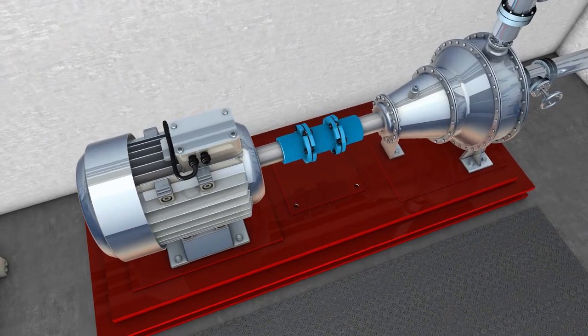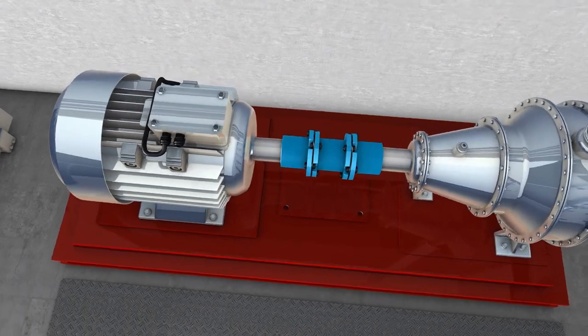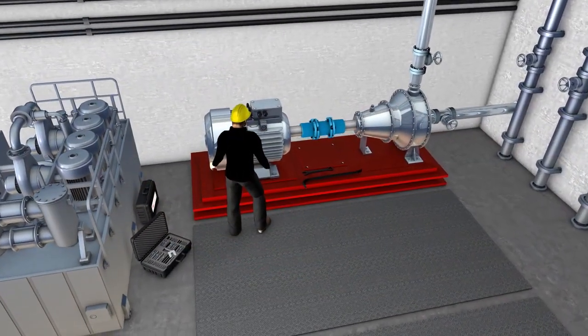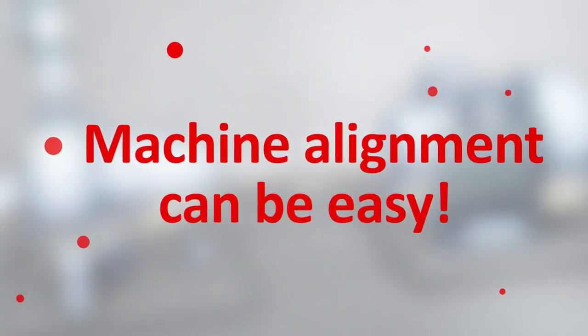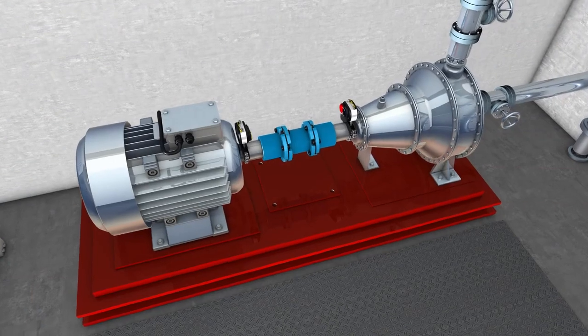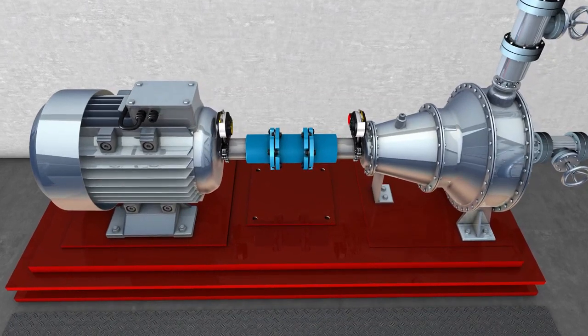Good machine shaft alignment is critical to keeping your operating and maintenance costs down. Moving a machine into the correct alignment can be time-consuming and challenging. However, with the correct approach and the right laser alignment tools, machine alignment can be easy. Let's take a look at a motor pump machine.